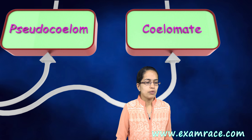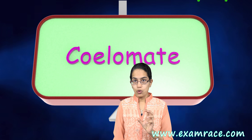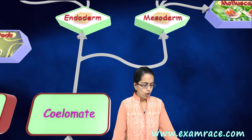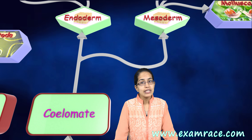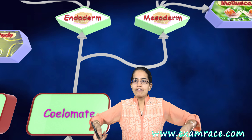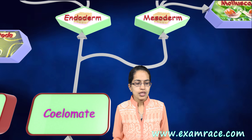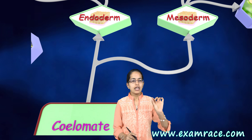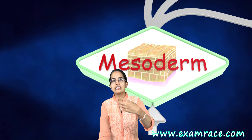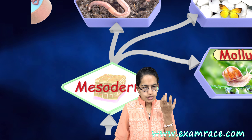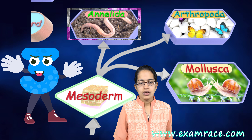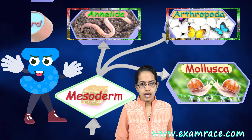The next classification is coelomate — those which have a coelom. These coelomates can be further classified into two categories: first, where you have mesoderm arising from a single cell of the embryo, and second, where you have a cavity being pinched into the endoderm. Under the mesoderm category, it can be further classified into three groups: Annelida, Arthropoda, and Mollusca.